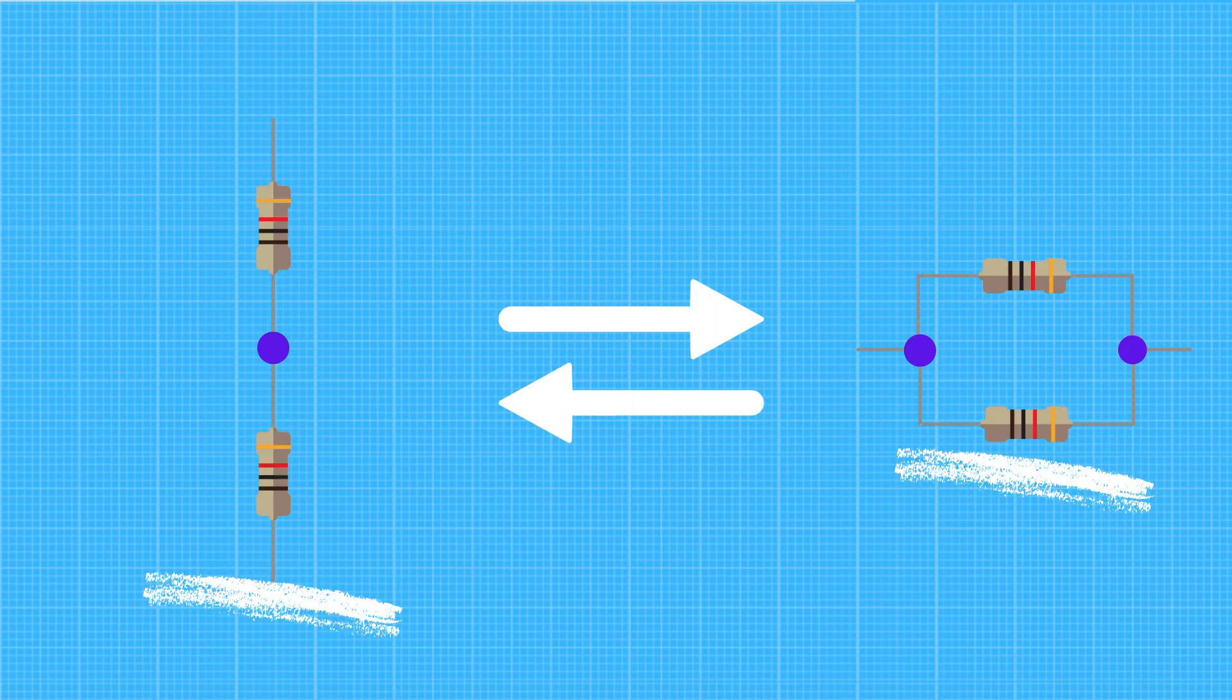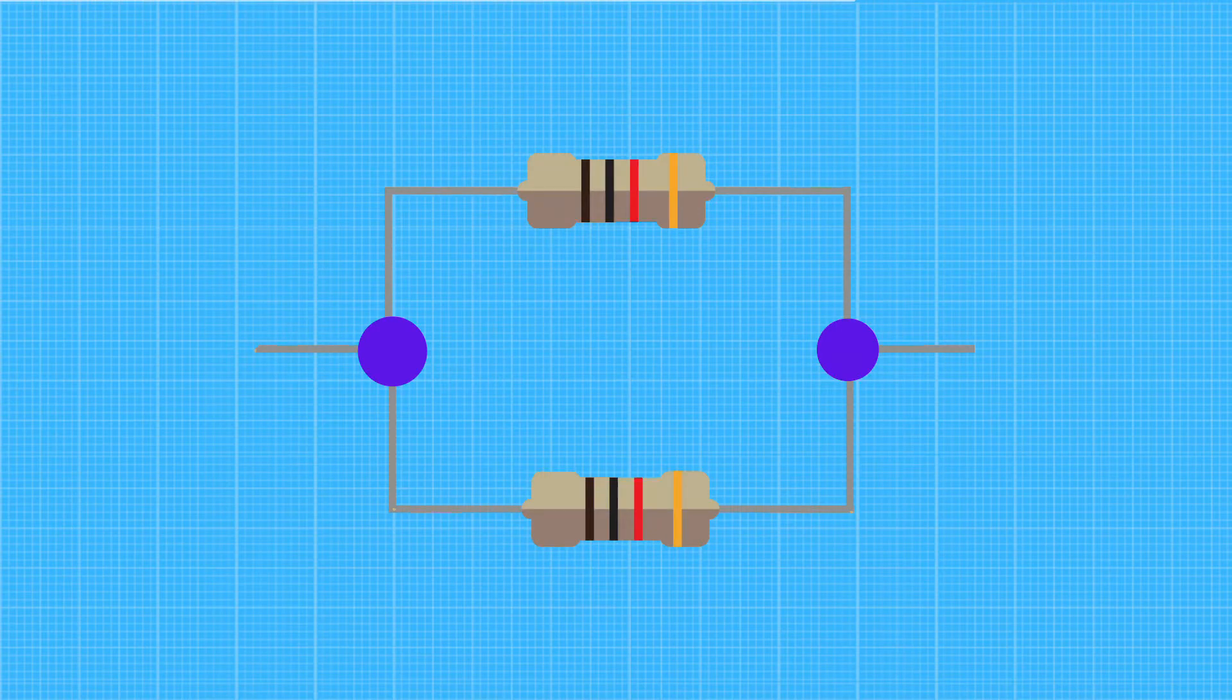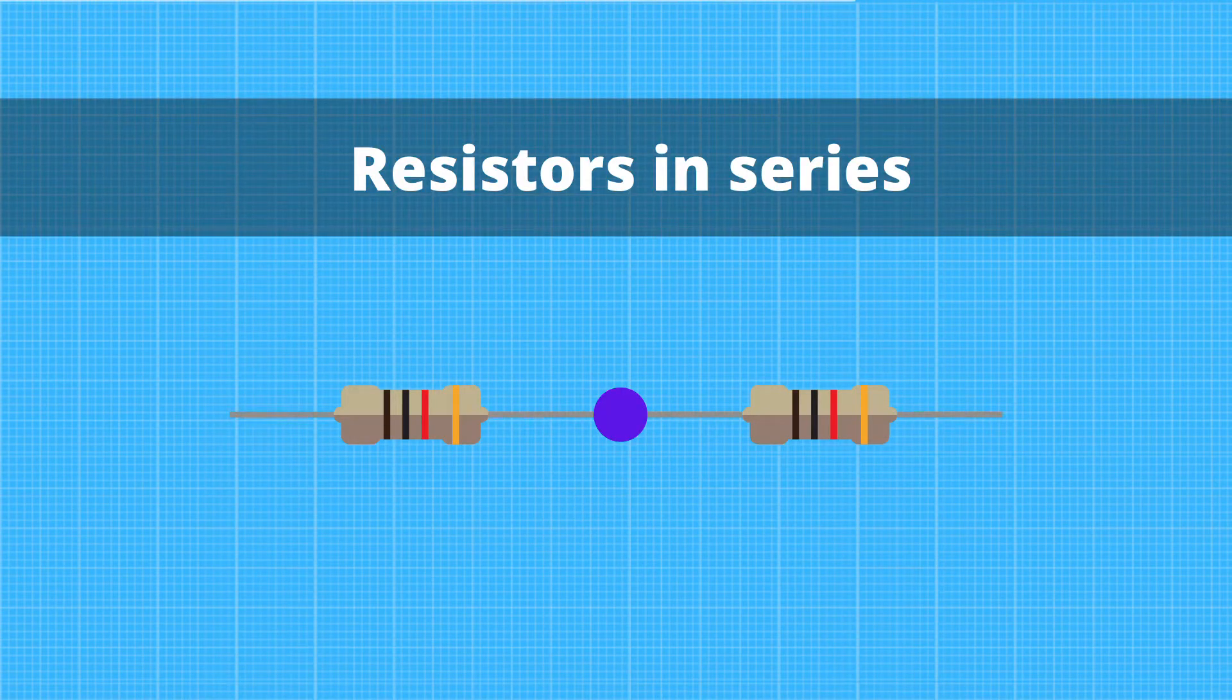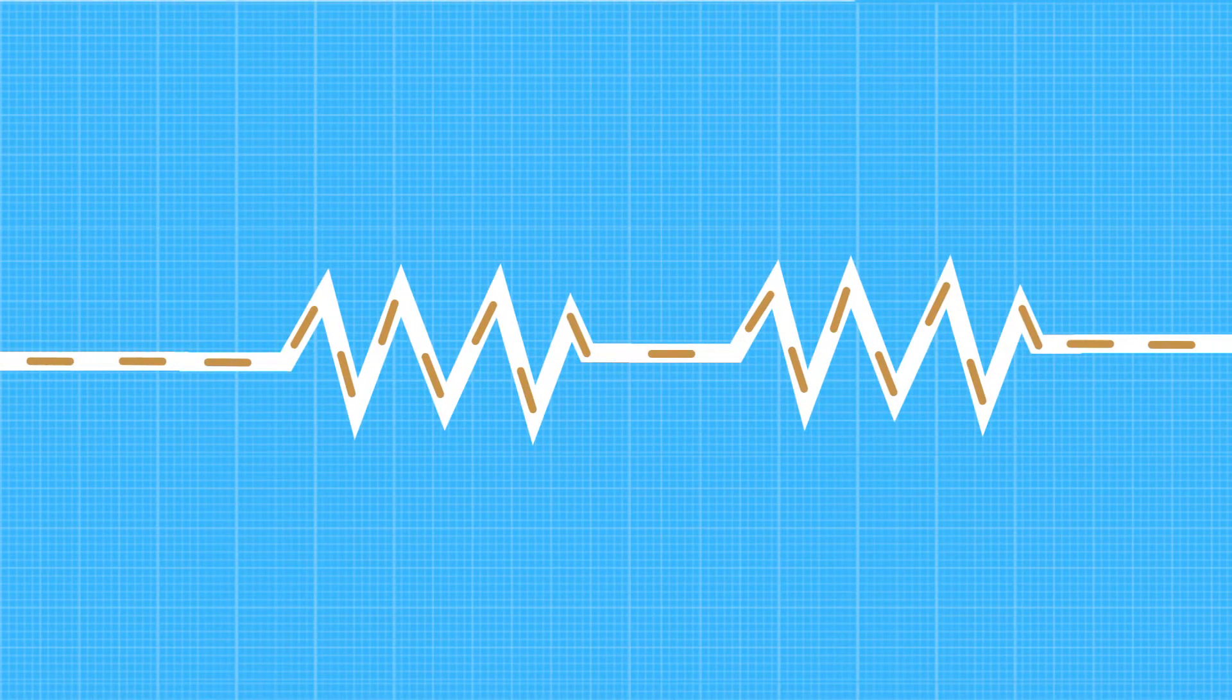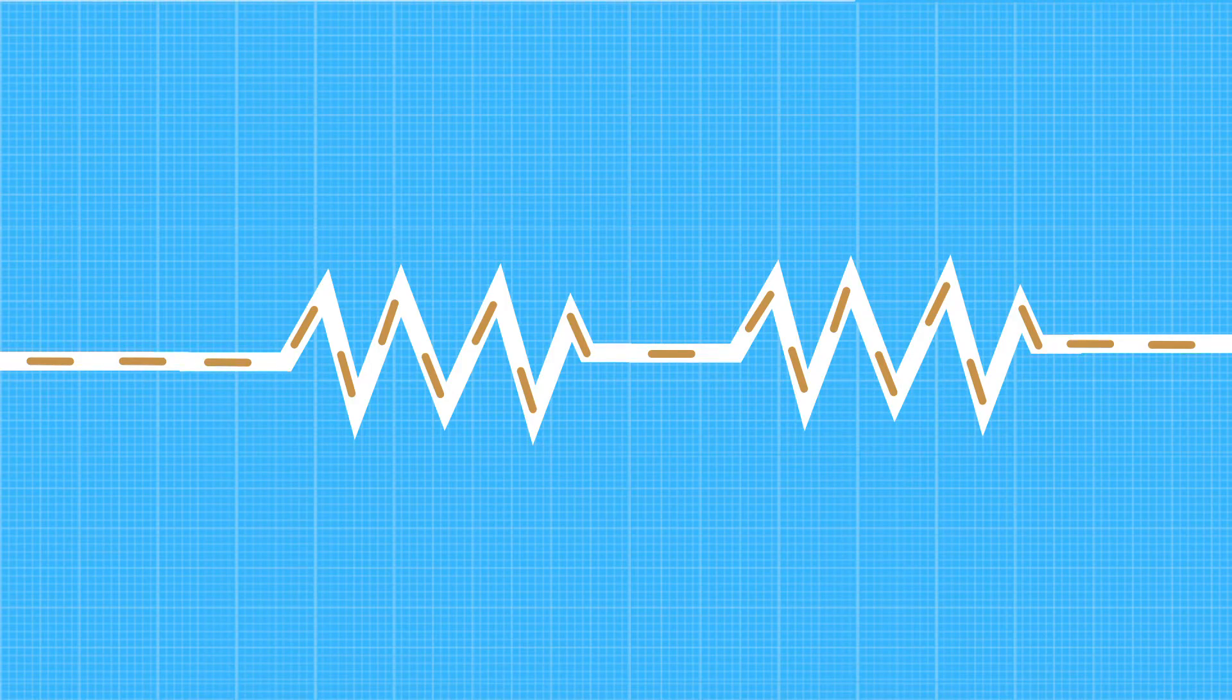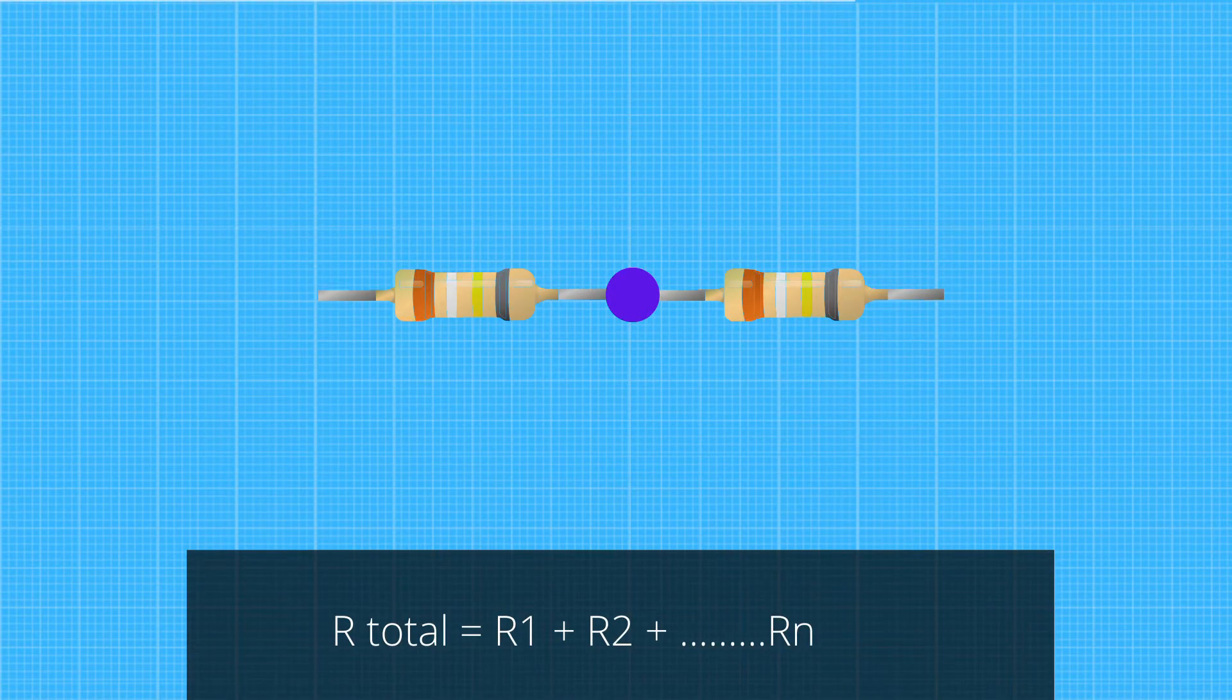I will first show you how a series connection of resistors works, and then a parallel connection. Resistors in series are resistors where the circuit current has to flow through each resistor. They are connected in a serial manner, with one resistor placed next to the other. When two or more resistors are connected in series, the total resistance of the circuit increases according to the rule: R total equals R1 plus R2 plus R3, etc.